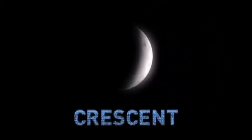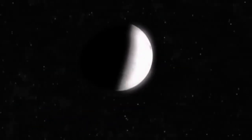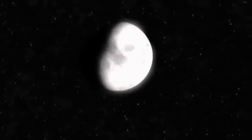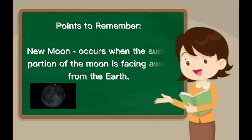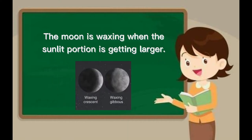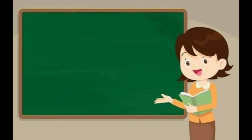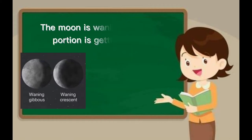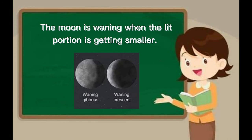In between, the moon is either a crescent — which means it's less than half full — or gibbous, which is more than half full. When the moon appears to be growing, we say it is waxing; if it appears to be getting smaller, it is waning. Here are some points to remember: A new moon occurs when the sunlit portion is facing away from earth. The moon is waxing when the sunlit portion is getting larger. A full moon is seen when the side facing earth is entirely sunlit. The moon is waning when the lit portion is getting smaller.